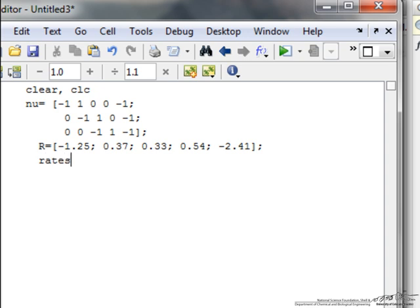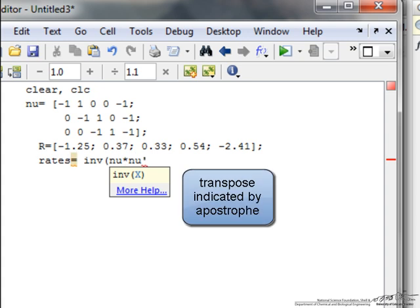What we want to determine are the rates, and this is a three by one matrix, so I am going to take the inverse of the matrix multiplied by the transpose, so the prime there indicates the transpose.